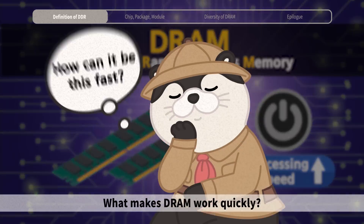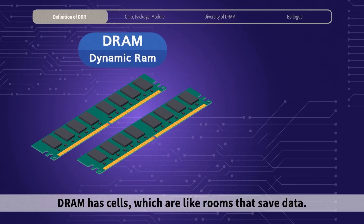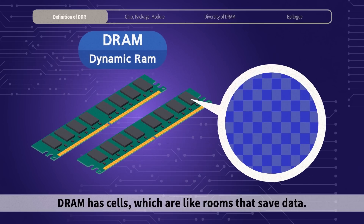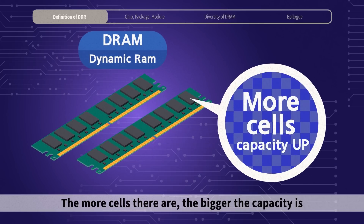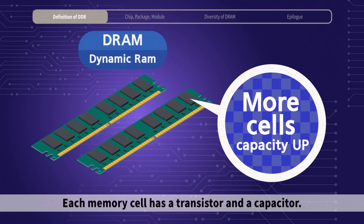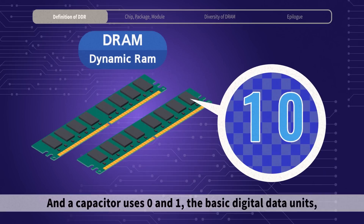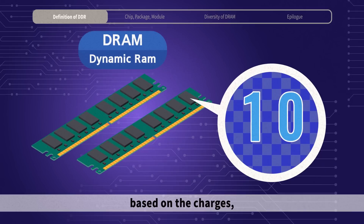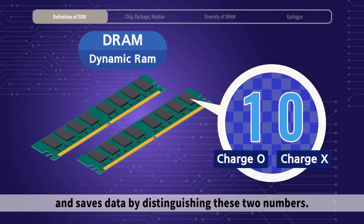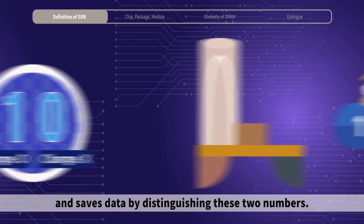What makes DRAM work quickly? DRAM has cells, which are like rooms that save data. The more cells there are, the bigger the capacity is. Each memory cell has a transistor and a capacitor. A capacitor uses 0 and 1, the basic digital data units based on the charges, and saves data by distinguishing these two numbers.